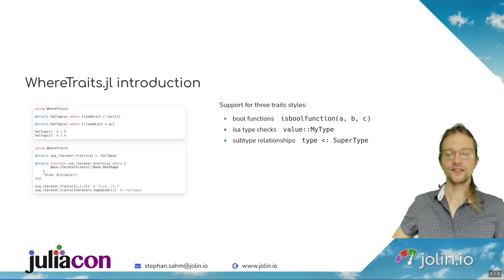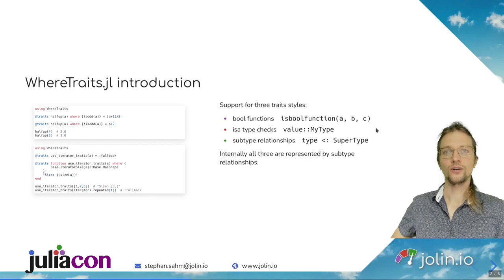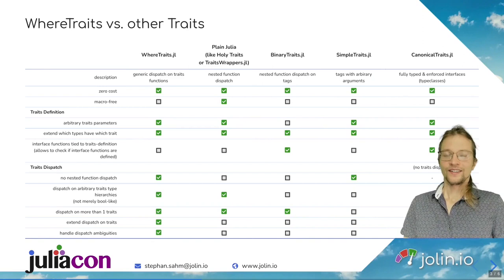For those who don't know WhereTraits, it gives you access to an extended Where syntax. You can use Boolean functions like you see here on the left in the example with isOdd to define your dispatch. You can also use type checks like you see in the second example with the iterator size and has shape. You can also use subtype relationships. Internally, all these three are represented as subtype relationships.